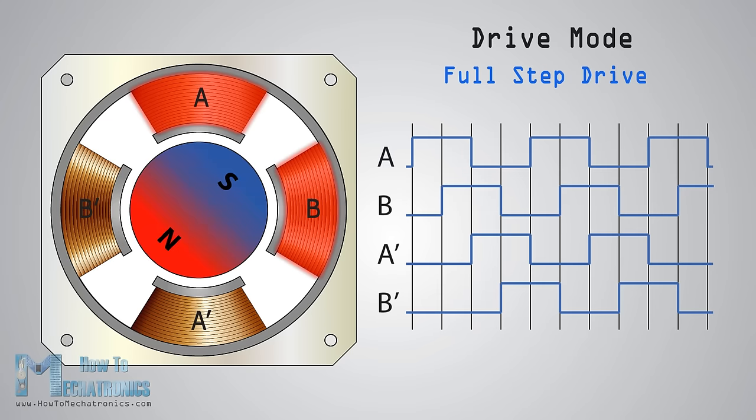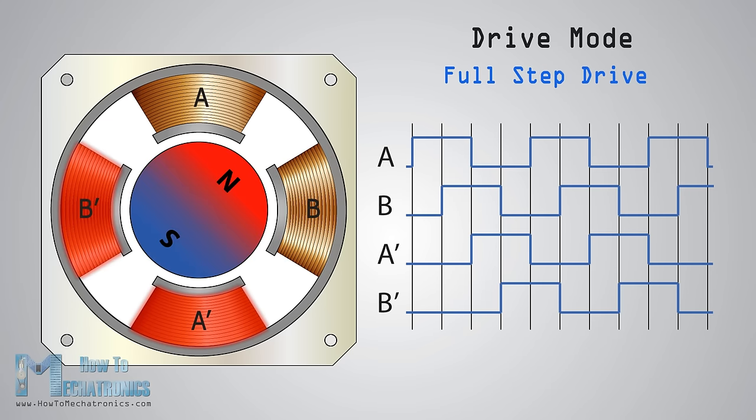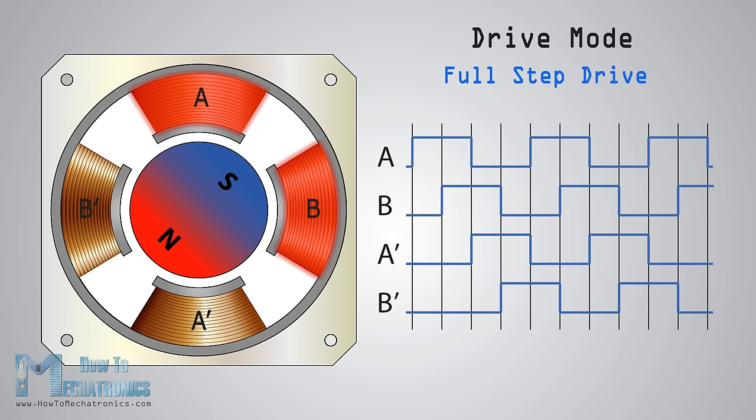Next is the full step drive mode, which provides much higher torque output because we always have two active coils at a given time. However, this doesn't improve the resolution of the stepper, and again the rotor will make a full cycle in four steps.